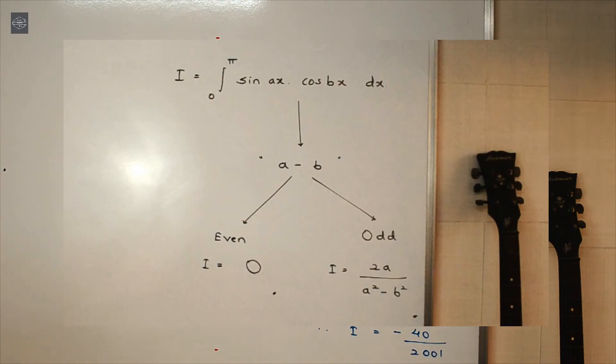So here we have the trick guys. Look, whenever we are dealing with integrals of the form 0 to π sin ax into cos bx, first, you have to find this term's value. So the value of the term a-b, if it's an even number, then the value of the entire integral, it will be 0. And if the value of the term a-b is an odd number, then the value of the entire integral, it will be i is equal to 2a upon a square minus b square. And that's it.